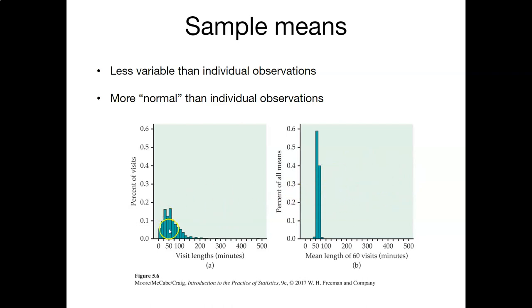Think of this as a histogram of the visit lengths — most of them are around 50 to 60 minutes. Whereas the graph on the right shows the average length across 60 randomly chosen visits. We can see this distribution on the right looks quite different from the individual observations on the left.